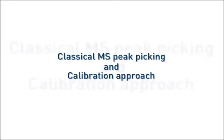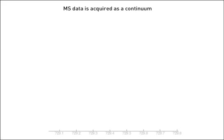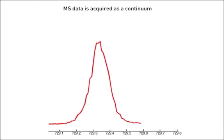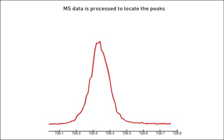In order to understand the CERNO calibration approach, let's first examine the current classical approach to mass spec calibration. It is very important to understand that mass spec data is not acquired as centroid data — the stick-like representations of a mass spectrum. Mass spec data is acquired as a continuum and then processed by the mass spec data station or firmware to locate the peaks and present the results in centroid form.